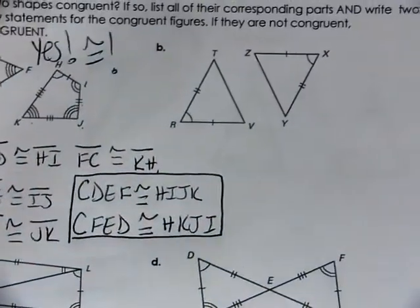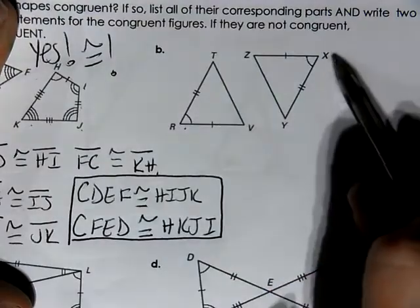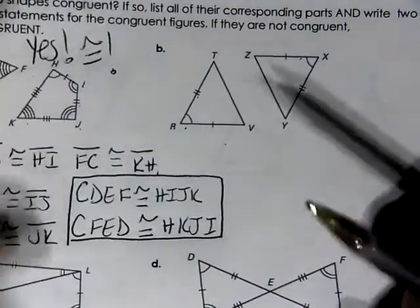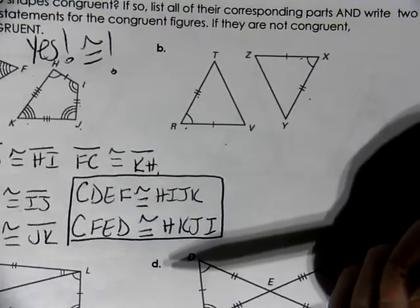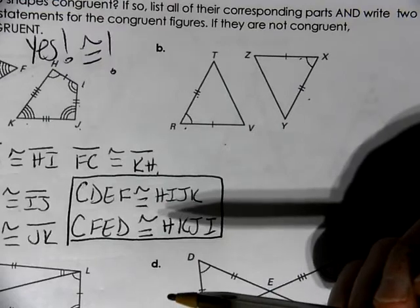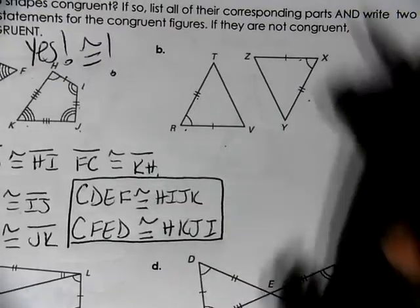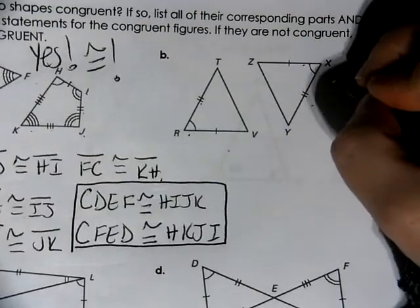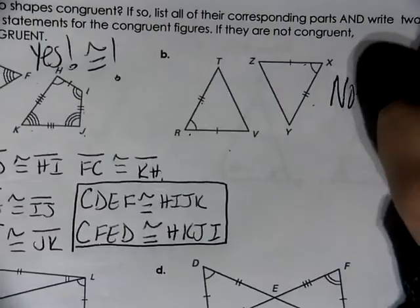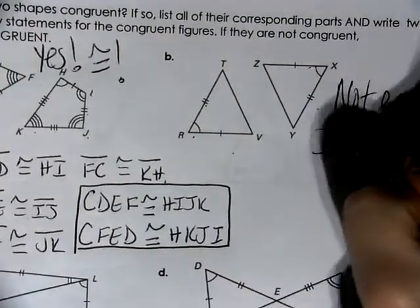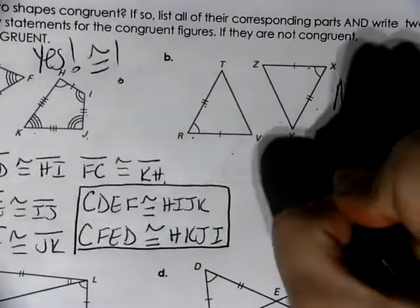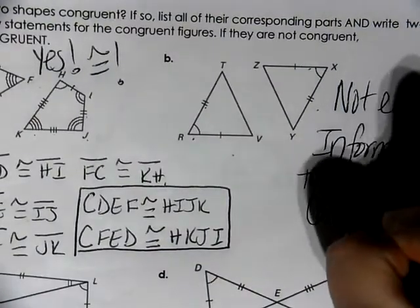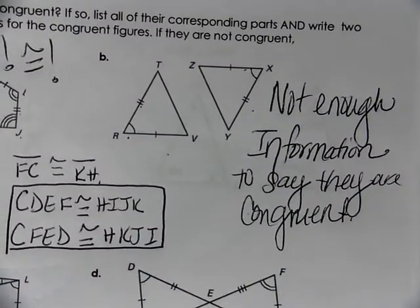For letter B, I can see that R and X have one arc mark, and there are two tick marks and one tick mark, but I don't have any other information. Without more information to establish how everything corresponds, I cannot say without a doubt that they are congruent. I would have to do a proof, so the answer is: not enough information to say they are congruent.